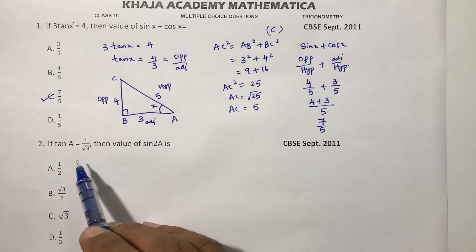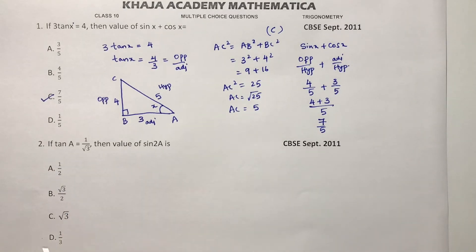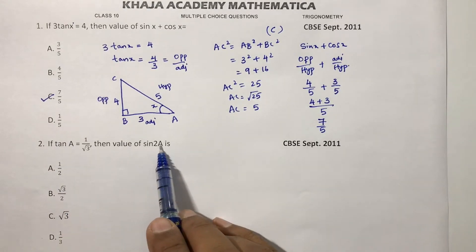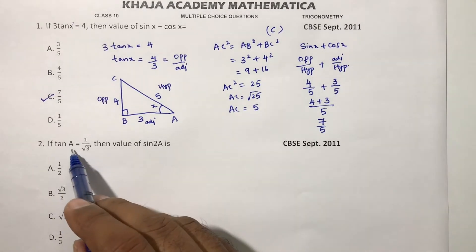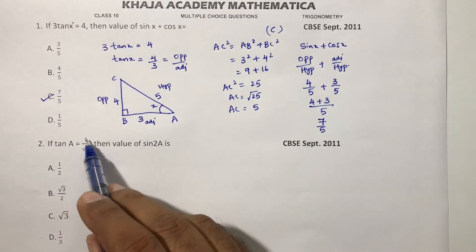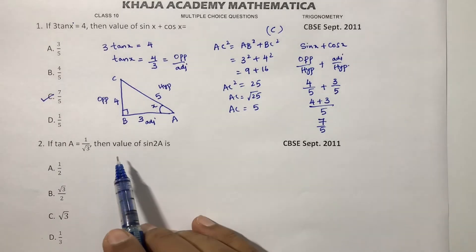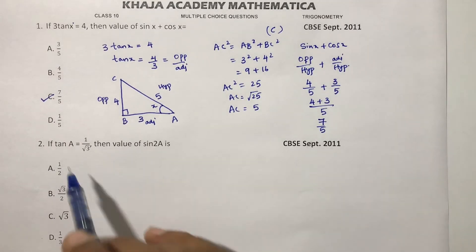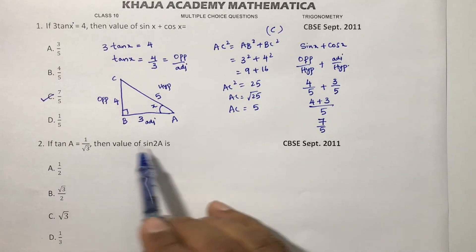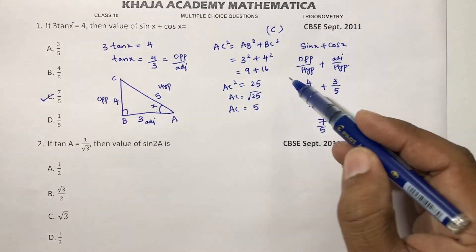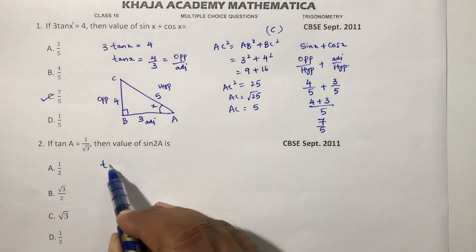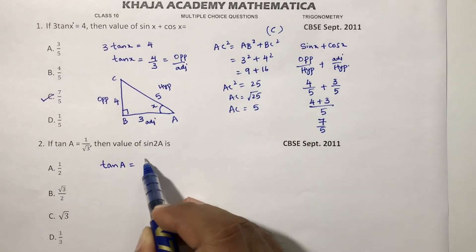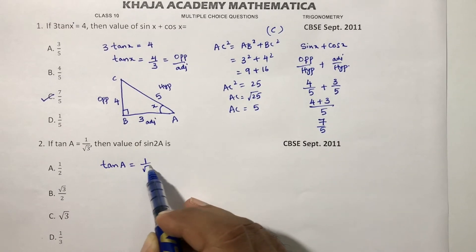If tan A equals 1 by root 3, then find the value of sin 2A. Instead of applying Pythagoras theorem, since they are asking sin 2A, first find the value of A. See, tan A is 1 by root 3.